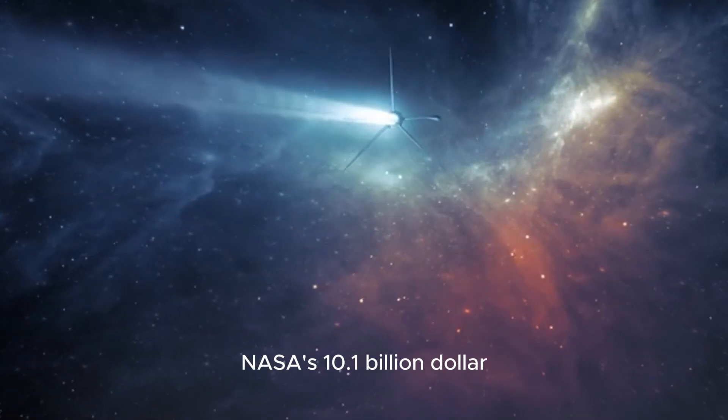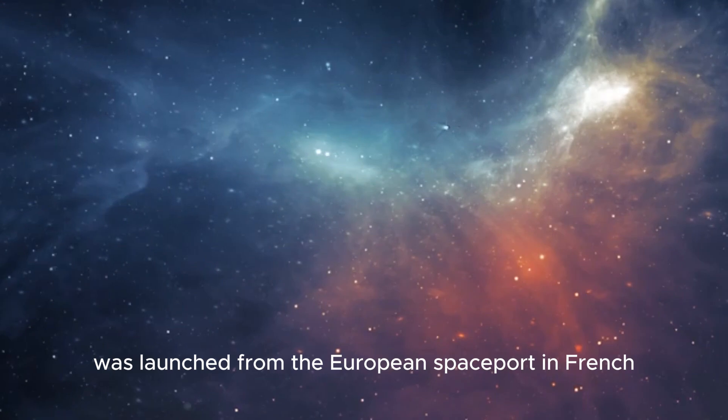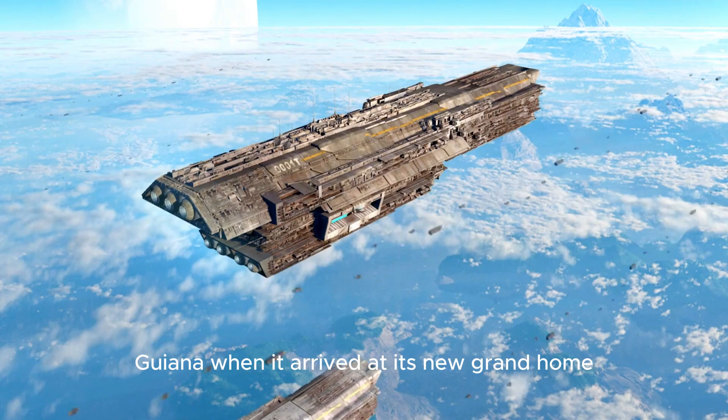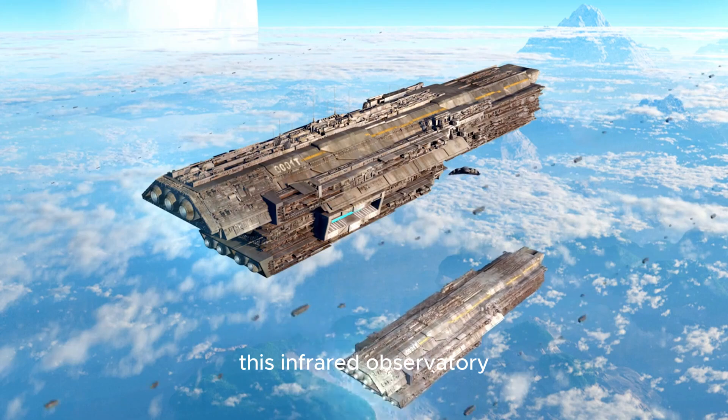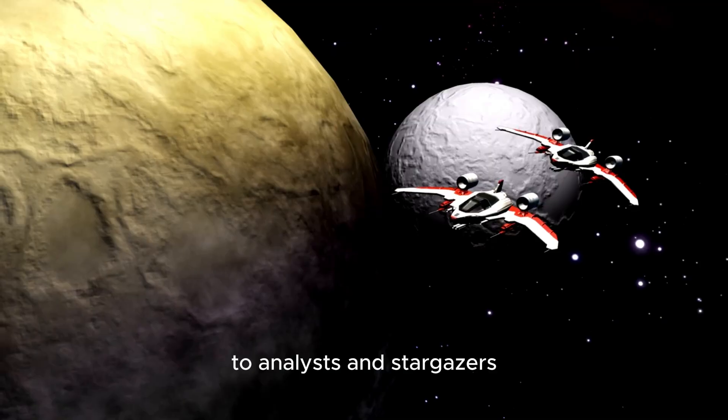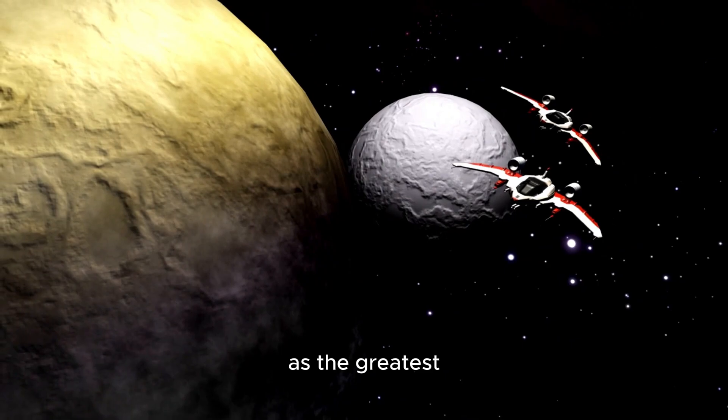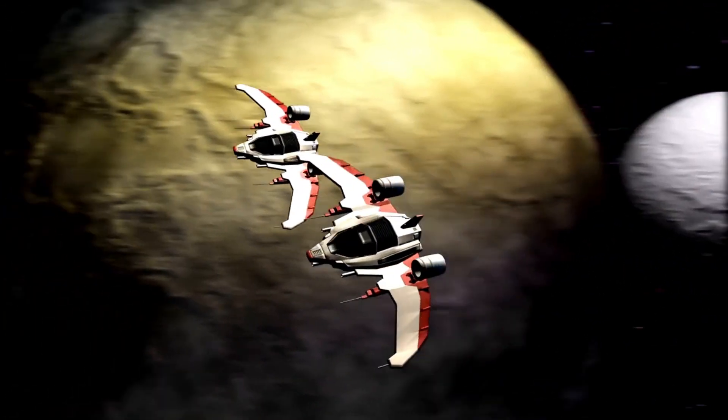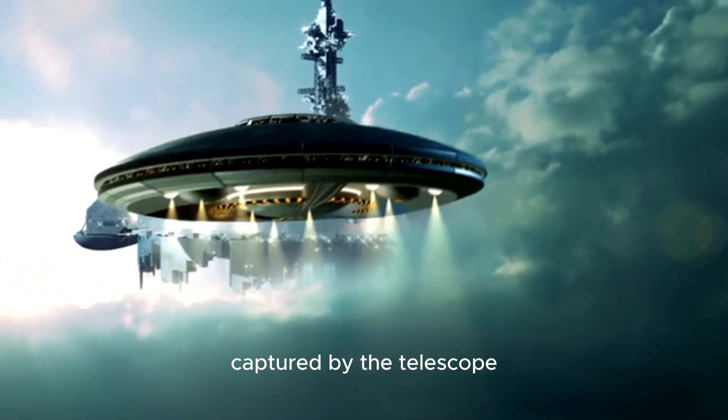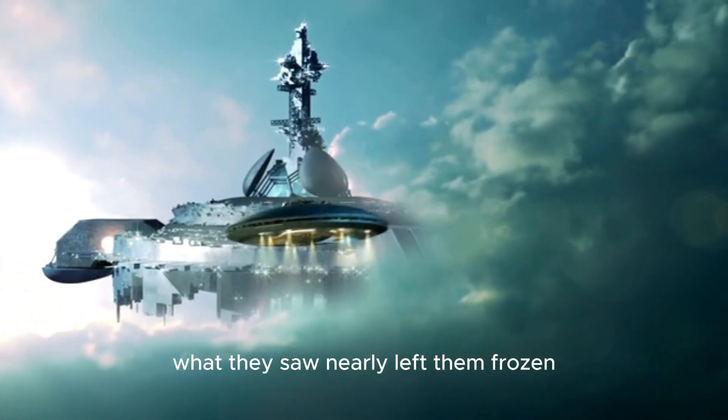NASA's $10.1 billion James Webb Space Telescope was launched from the European Spaceport in French Guiana. When it arrived at its new grand home, this infrared observatory provided dazzling views of the universe to analysts and stargazers. As the greatest and most advanced space telescope to date, analysts were excited to see the first scientific pictures captured by the telescope. What they saw nearly left them frozen.